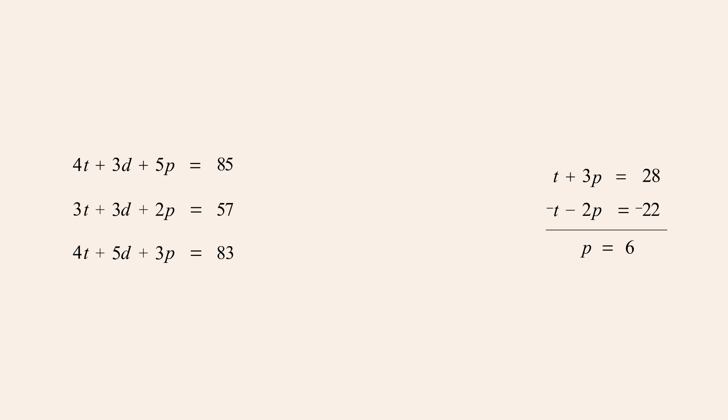Now we can substitute 6 for p in either equation to find the value of t. Substituting 6 into the top equation gives us t plus 18 equals 28, or subtracting 18 from both sides, we get t equals 10.